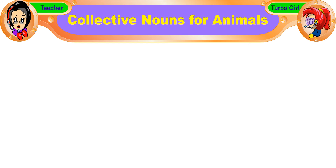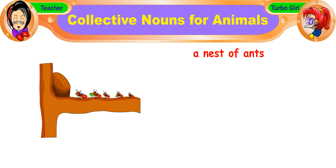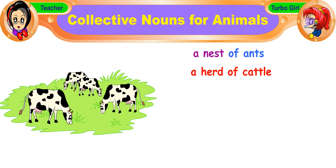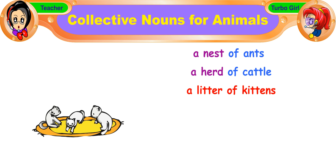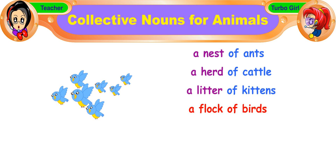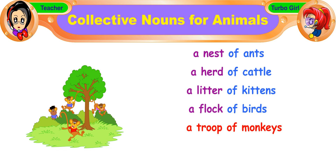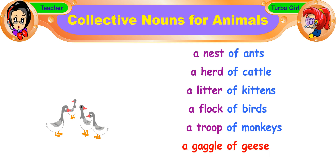Here are some collective nouns for animals: a nest of ants, a herd of cattle, a litter of kittens, a flock of birds, a troop of monkeys, a gaggle of geese.